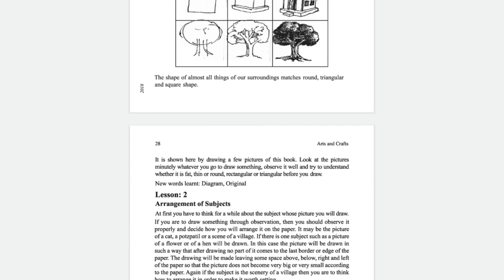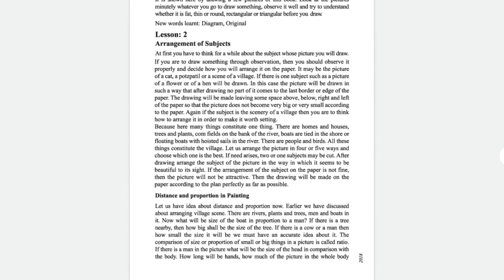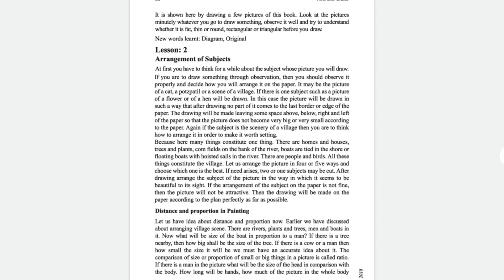Now move on to lesson number two: arrangement of subject, page number 28. When you draw a picture you choose a subject. For that you need proper observation and decide how you will arrange it on the paper — it may be a cat, or a village scenery. The picture should be drawn in such a way that after drawing, no part of it comes to the last border, leaving some space above, below, right, and left of the paper.